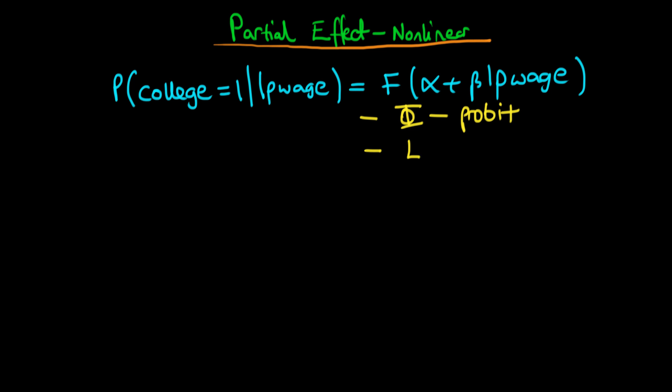So this video is going to be about, essentially, how do we calculate the impact of a one-unit change in the log of parental wage. And we're going to explain why it's not necessarily equal to beta. So if we imagine the change in probability associated with a one-unit change in the log of parental wage, then we can find that quite easily.